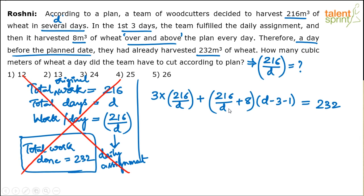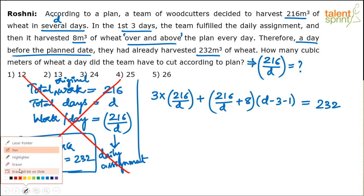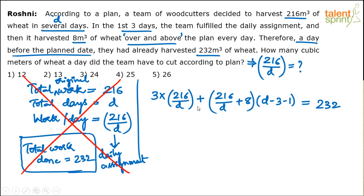You can also use the options, but the options are given as values of 216/d — not d itself. So substituting options directly for d won't work. What's given in the options is 216/d. You can eliminate some options directly. Let's solve the equation first and then I'll show how to use options. It will lead to a quadratic equation.